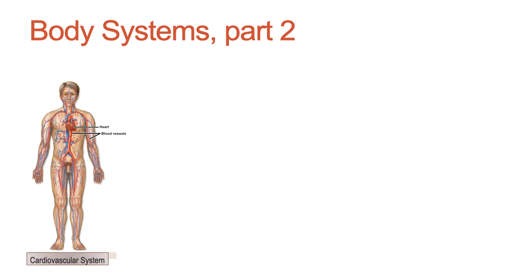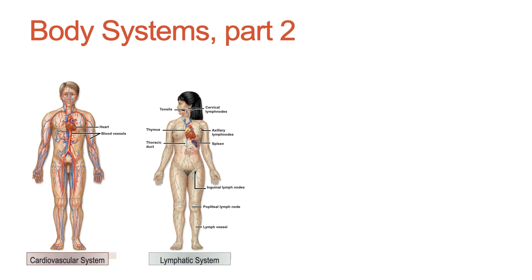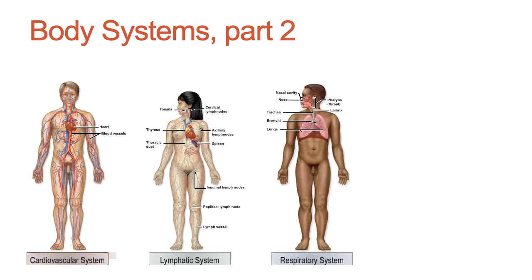The cardiovascular system delivers oxygen and nutrients to the cells in the tissues. It also performs a role in temperature regulation and can contribute to waste removal. The lymphatic system returns fluid to the blood, but it also plays a role in immunity to pathogens. The respiratory system removes CO2 from the body and delivers oxygen to the blood — those are the major functions, but it has other roles as well.